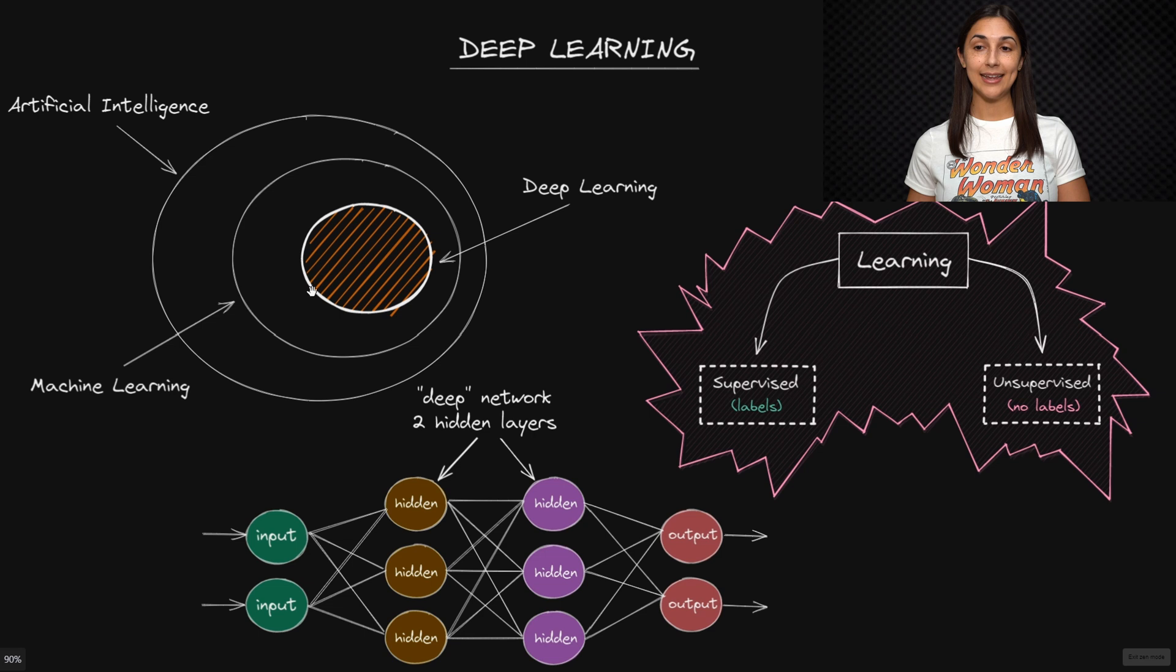Deep learning is a subfield of machine learning, which itself is a subfield of artificial intelligence. The field of deep learning makes use of learning algorithms called artificial neural networks.